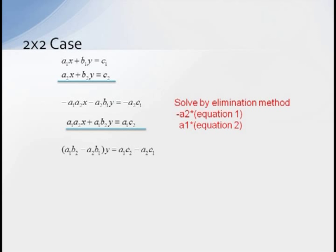Now the coefficient of X in the first equation is minus A1 times A2 and the coefficient of X in the second equation is A1 times A2. So adding these two equations together will eliminate the X term. The coefficient for our Y term becomes A1 times B2 minus A2 times B1 and our constant term is A1 times C2 minus A2 times C1.